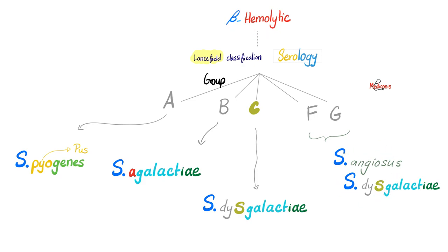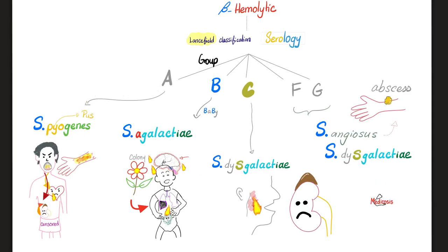Streptococcus pyogenes — this is pyogenic — I can have pus in my skin, I can have pus in my throat, and then the complications include rheumatic fever and post-streptococcal glomerulonephritis. Streptococcus agalactiae: we're talking neonatal sepsis, neonatal meningitis, and neonatal pneumonia. Streptococcus dysgalactiae mostly causes pharyngitis. Can they lead to post-streptococcal glomerulonephritis? Yes, they can.